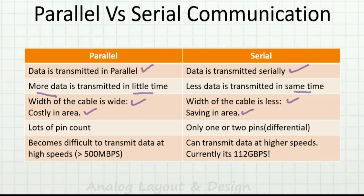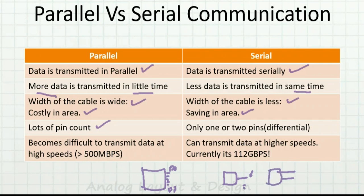If I take an IC that is transmitting a lot of data in parallel, I need many data pins — D0 to D7. Whereas with serial communication, I need only one pin or maximum two pins. If it is differential, it is two pins; if it is single-ended with respect to ground, it is one pin. So I reduce the pin count significantly.